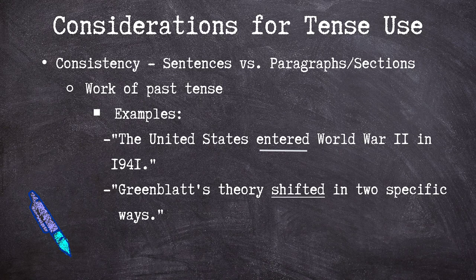The concept of tense consistency generally applies to paragraphs and larger sections of writing too, with some specific considerations. We should establish a primary tense for a section and only shift from it to purposefully indicate a shift in time frame. We can use past tense to narrate events, share biographical information about someone from history, or talk about the change in someone's thinking over time. For example, 'The United States entered World War II in 1941' narrates historical events, while 'Greenblatt's theory shifted in two specific ways' shows a change in thinking over time.